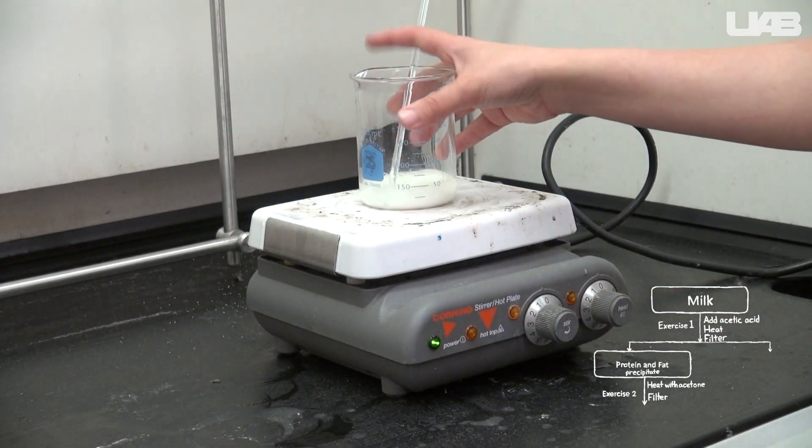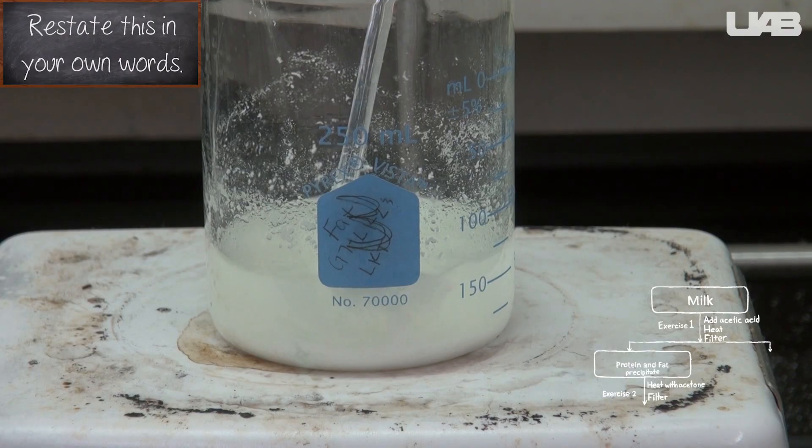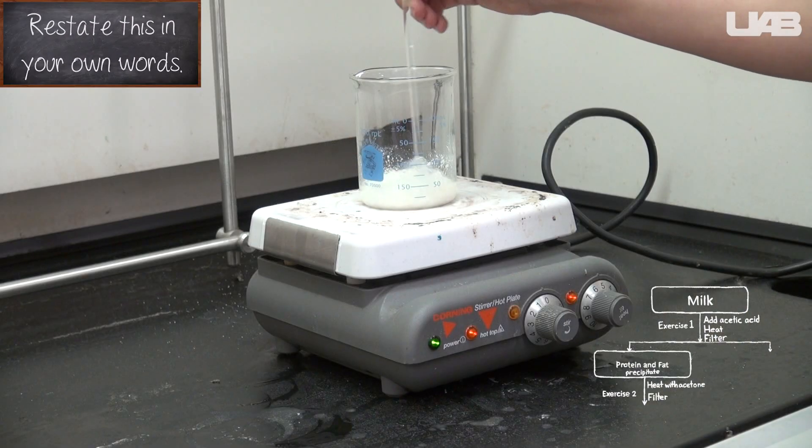Place the beaker on the hot plate, turn it to low heat around two or three, and stir quickly to prevent bumping, which could cause the solution to splash out of the beaker and potentially burn someone.